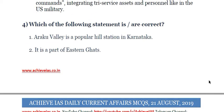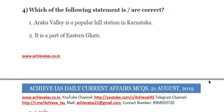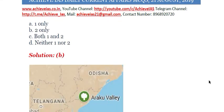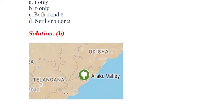The fourth question: consider the following statements — first, Araku Valley is a popular illustration in Karnataka; second, it is a part of the Eastern Ghats. Karnataka is on the western coast, not the east coast, so we can eliminate that. The second statement is correct because Araku Valley is in Andhra Pradesh, which is on the east coast — not in Karnataka. So only the second statement is correct.